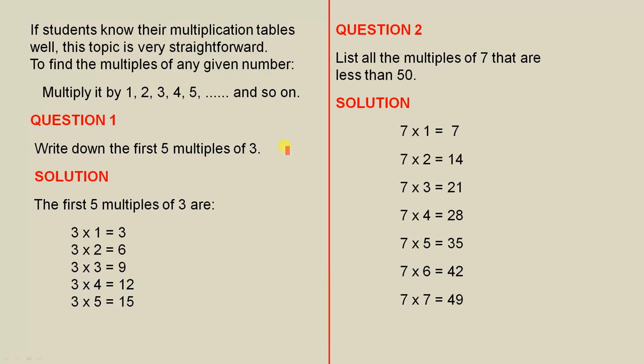Question 1: Write down the first 5 multiples of 3. Solution: The first 5 multiples of 3 are just the 3 times tables. You start from 3 × 1 and go up to 3 × 5. So the first 5 multiples of 3 are: 3, 6, 9, 12, 15.